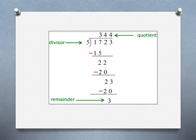In the next example, 1723 is the dividend and 5 is the divisor. 17 doesn't divide equally by 5, so multiply 5 by 3 to get 15; subtract 15 from 17 to get 2. Bring down the next digit making 22; multiply 5 by 4 to get 20, subtract to get 2. Bring down the last digit making 23; multiply 5 by 4 to get 20, subtract to get 3 — that is the remainder. This is called division of whole numbers. I hope you understood well. Thank you for listening.